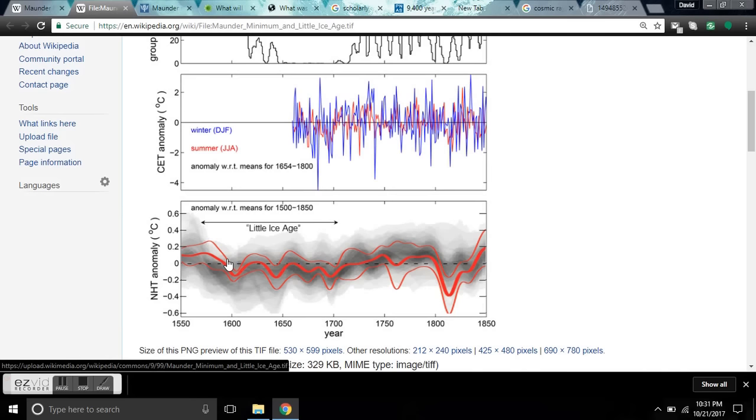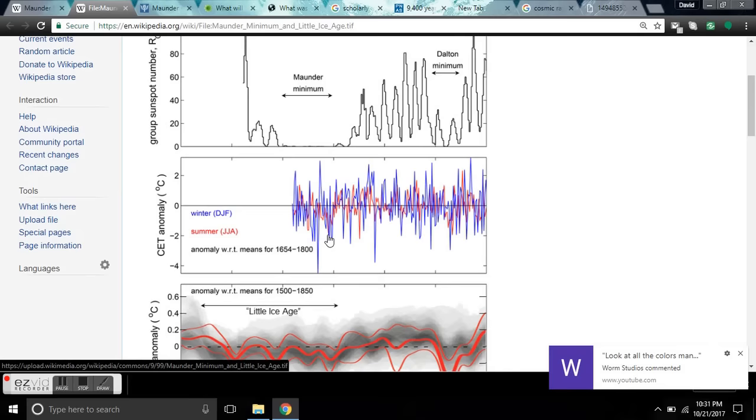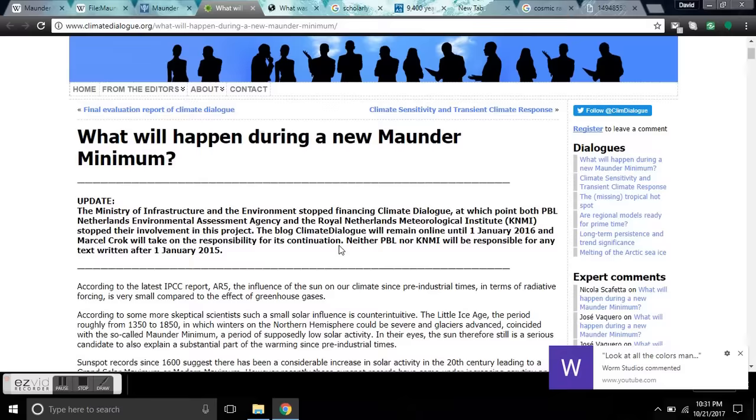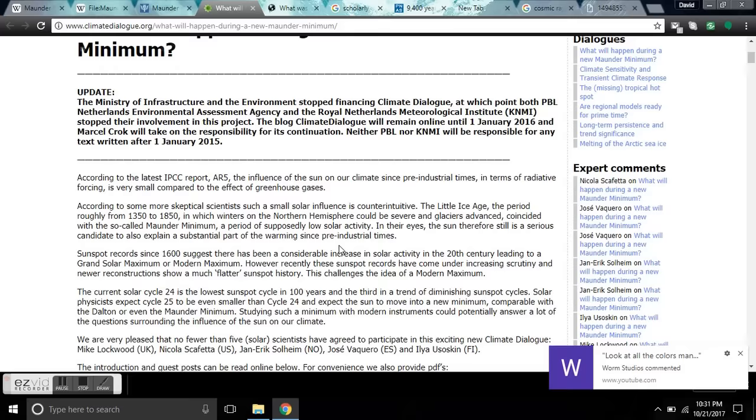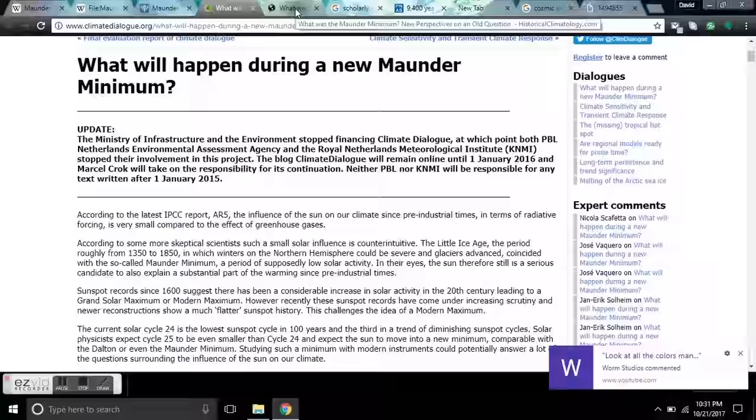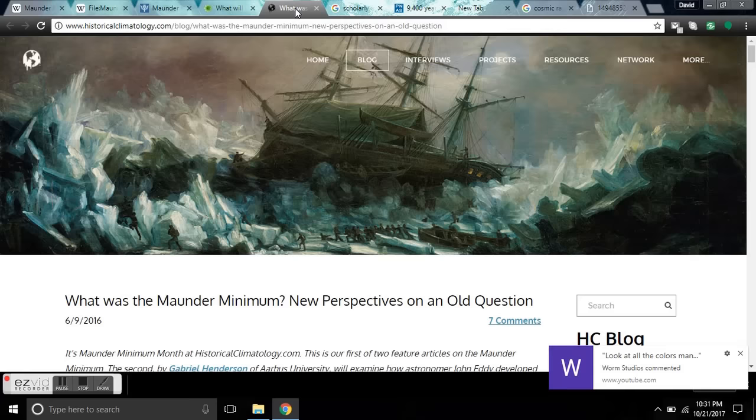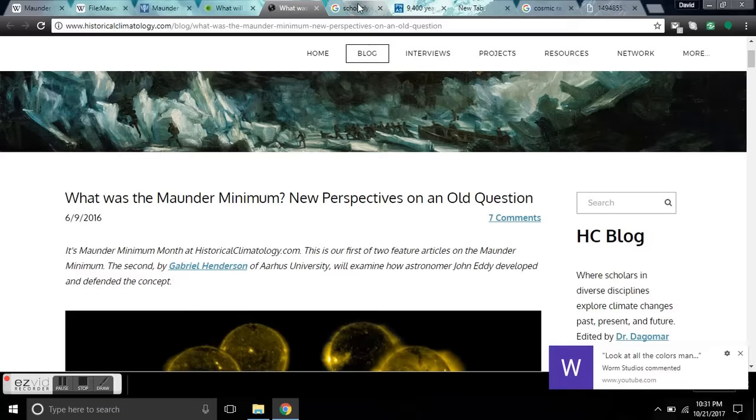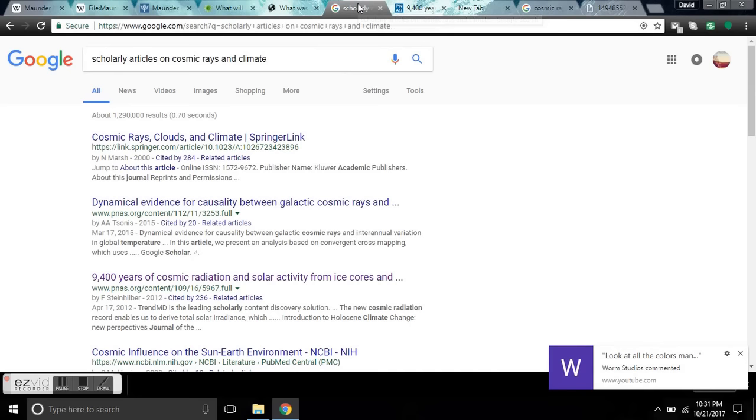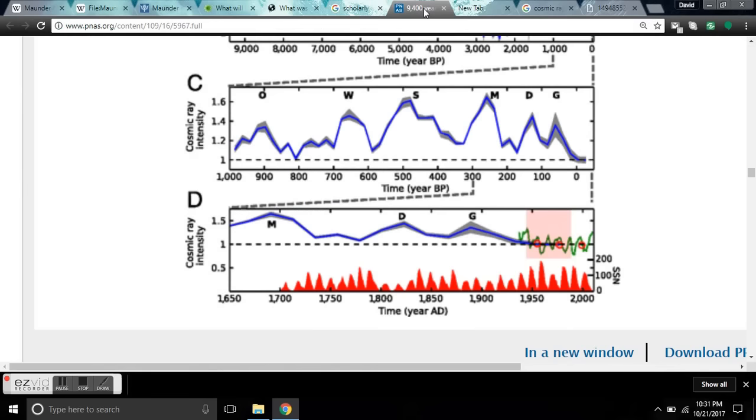Folks, we're headed into a below baseline area in just a few years. And we're going to stay there for decades. And that's what's significant. I'll leave you links to what will happen during a new Maunder Minimum. What was the Maunder Minimum? Scholarly articles on cosmic rays and climate. And let's get a close-up here.